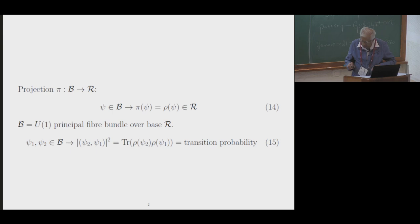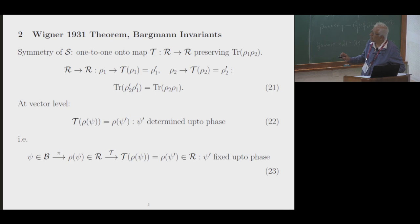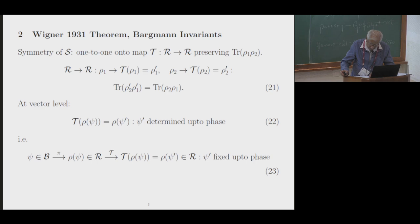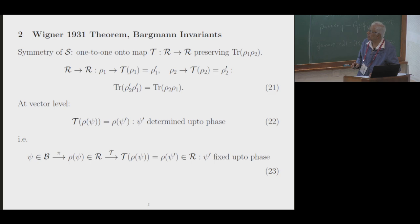With this basic background, let me come to a famous theorem in quantum mechanics due to Wigner. This was proved by Wigner in the year 1931, and over the decades many people have given new proofs of this theorem from various points of view using different kinds of mathematical ideas. The theorem itself is quite appealing, so I would like to describe it in a little bit of detail.